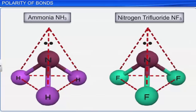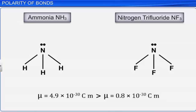It is really interesting to know that different molecules with the same geometry or shape may have different dipole moments. Let us consider ammonia and nitrogen trifluoride molecules. Both of them have pyramidal shapes with a lone pair of electrons on each nitrogen atom. But the dipole moment of ammonia is greater than that of nitrogen trifluoride, even though fluorine is more electronegative than nitrogen. The dipole moment of ammonia is 4.9 × 10⁻³⁰ C·m, while that of nitrogen trifluoride is 0.8 × 10⁻³⁰ C·m.